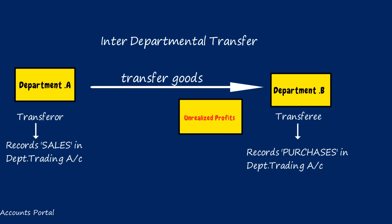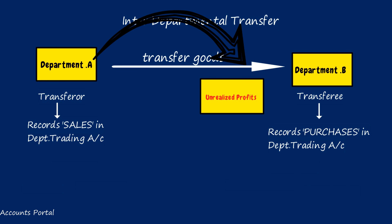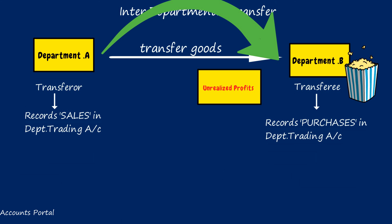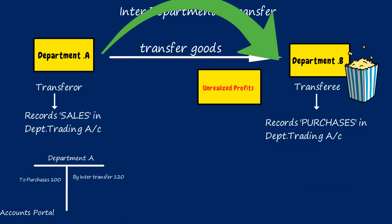When does unrealized profit arise? When one department transfers goods to another department at cost plus profit or markup, and the receiving department has certain closing stock, then the closing stock of the receiving department contains an element of unrealized profit, which is known as stock reserve. This stock reserve needs to be eliminated in order to know the true profit of the company.